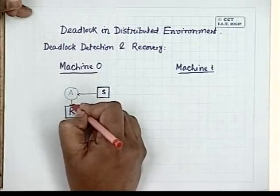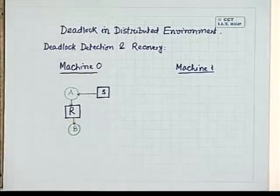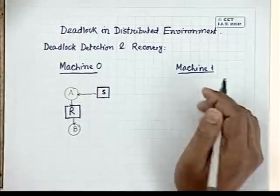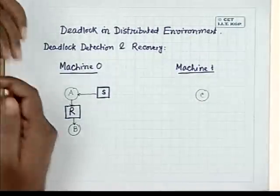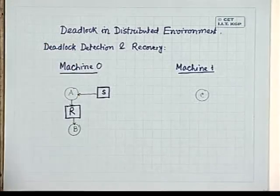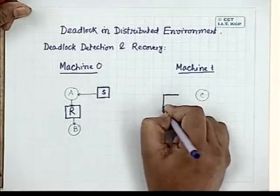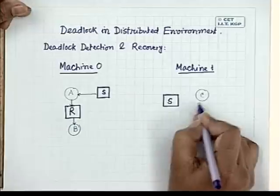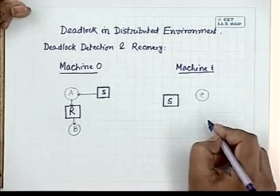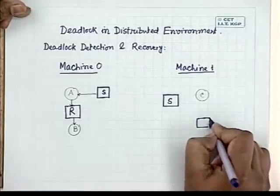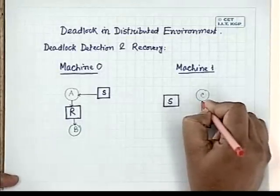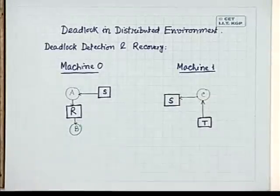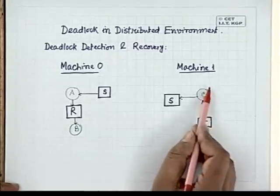At a particular instant, resource S is allocated to process A, A has requested resource R, and R is currently allocated to process B. In machine 1, process C has resource T allocated to it and has put a request for resource S, which is located in machine 0.